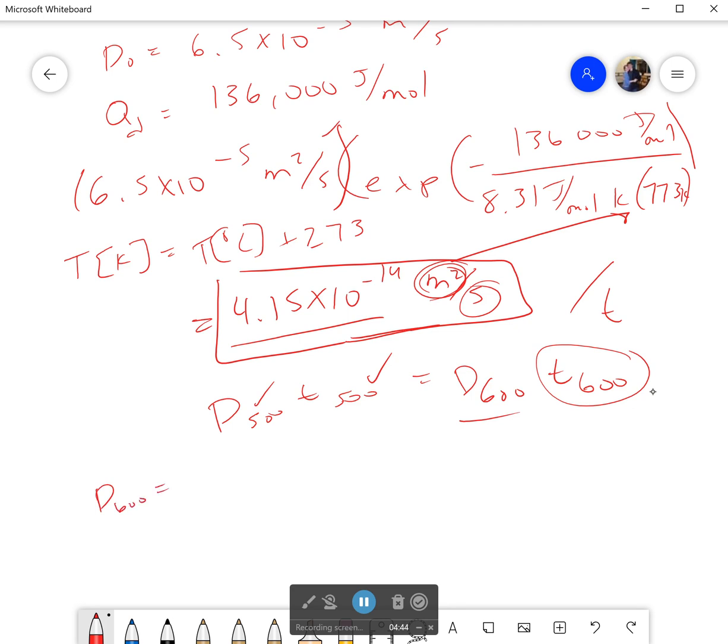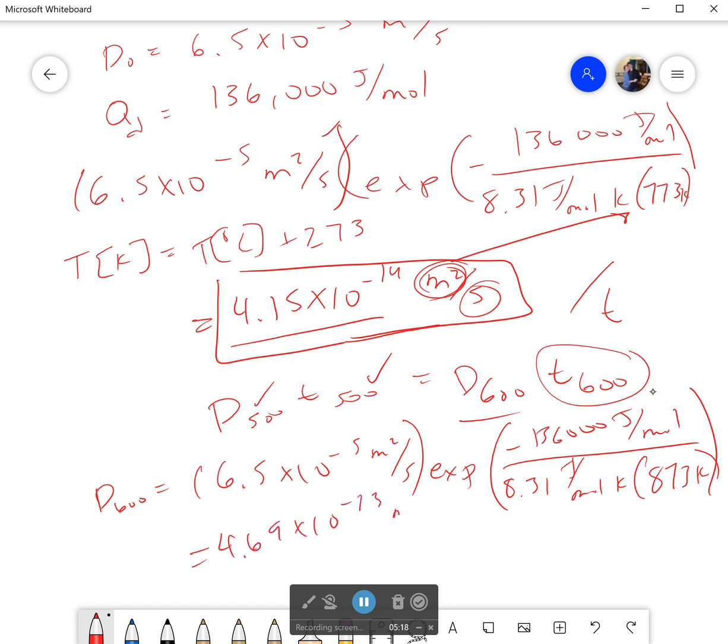So I'll do that. D at 600 is going to be equal to 6.5 times 10 to the negative fifth meters squared per second, exponential of negative 136,000 joules per mole, all over 8.31 joules per mole Kelvin. That's the gas constant in case you didn't remember that, times 873 Kelvin, because I added 273 to 600. That would come out to be 4.69 times 10 to negative 13 meters squared per second.